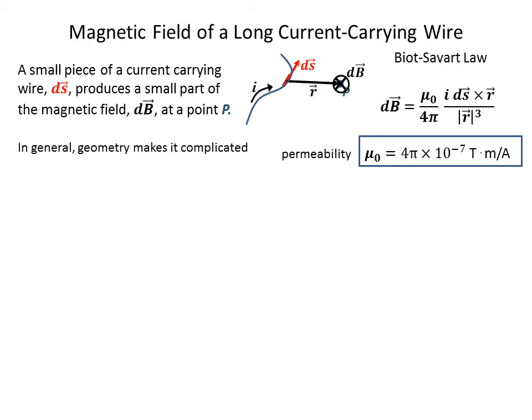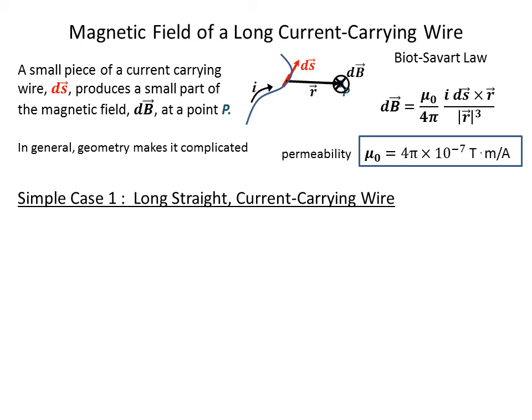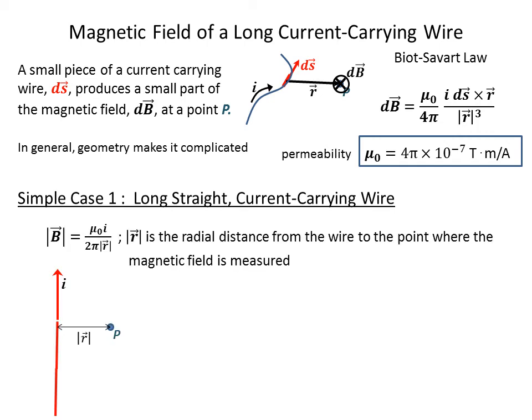In general, if you're trying to figure out the magnetic field from the whole wire, the geometry makes it very complicated. But there are some simple cases where it is easier to figure it out. One of them is a long, straight current carrying wire. The result ends up being the magnitude of the B field is equal to mu zero times the current divided by 2 pi r, where r is the radial distance from the wire to the point where the magnetic field is measured.